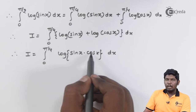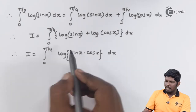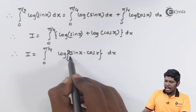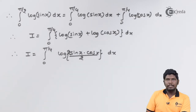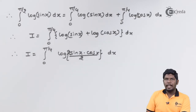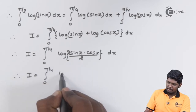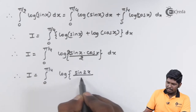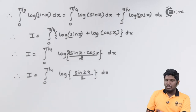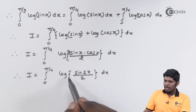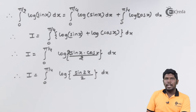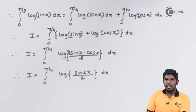We use the property log A plus log B equals log AB. When sine x and cos x appear together in product form, we multiply by 2 and divide by 2 to balance, since 2 sin x cos x = sin 2x. So we have the integral from 0 to pi by 4 of log(sin 2x / 2) dx. We then use the property log(A/B) = log A minus log B.